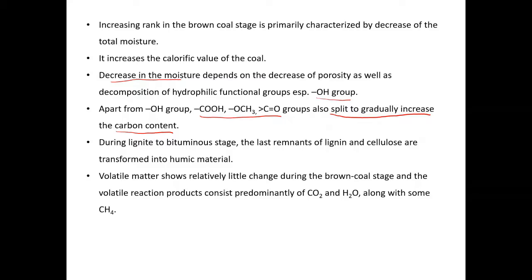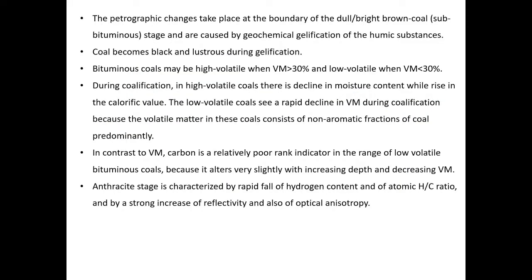The volatile matter shows relatively little change during the brown coal stage. The volatile reaction products consist predominantly of carbon dioxide and water, along with some CH₄. In the brown coal stage, the volatile matter content is still higher and doesn't change much. Whatever changes take place, that volatile matter content is lost in the form of carbon dioxide, water, and sometimes methane gas — these are all products of the change in volatile matter under the impact of temperature.